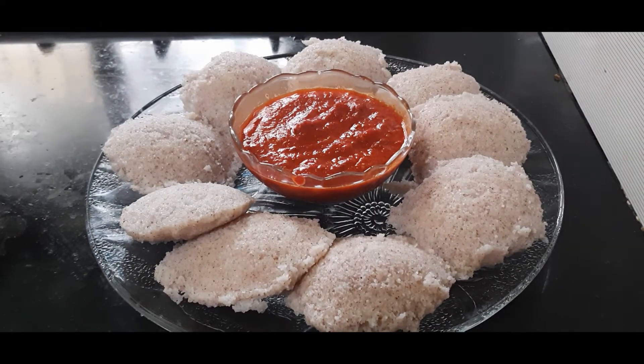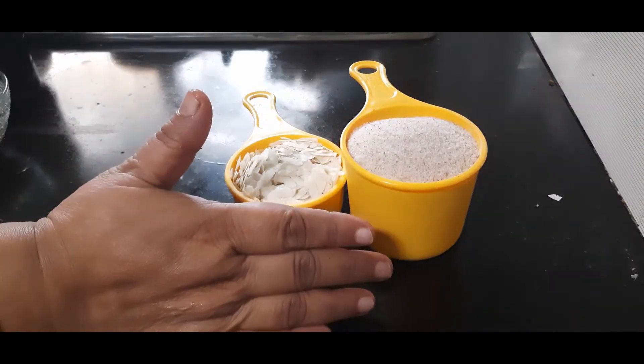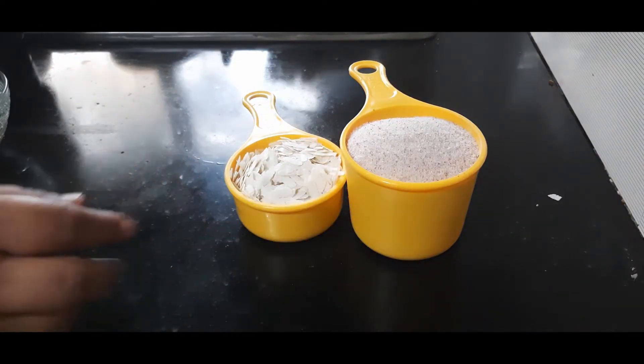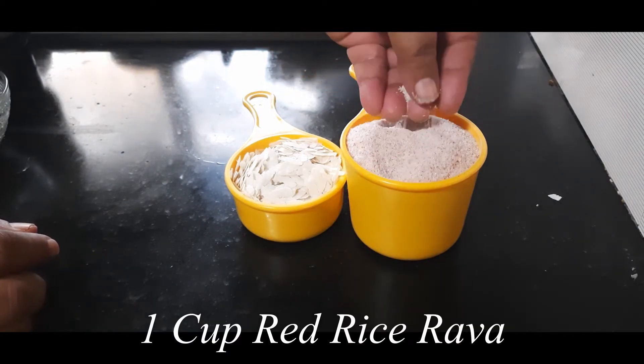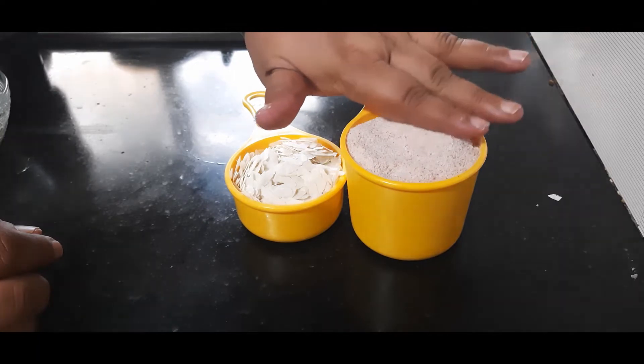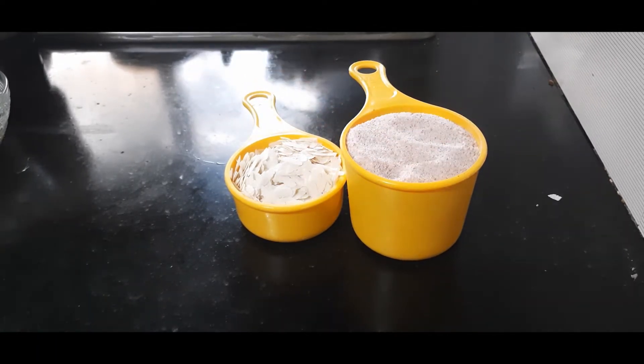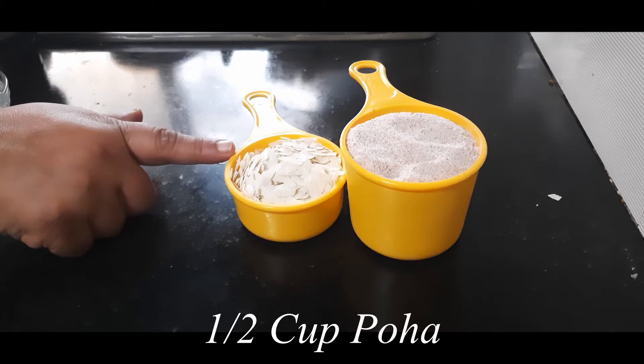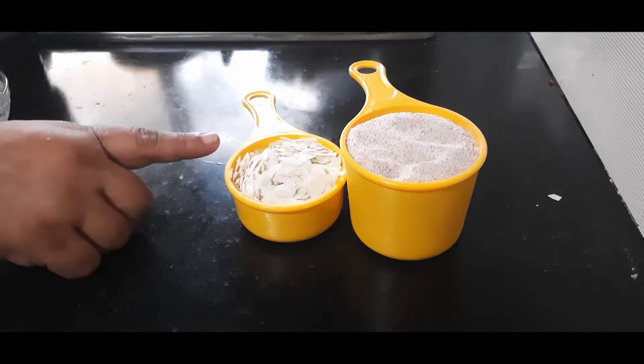Let us see the beautiful recipe. To start with, I have taken one cup of idli rava. This is red rice idli rava which is more healthy, but in case you don't have red rice idli rava, you can use the normal idli rava also, and half a cup of poha or beaten rice.